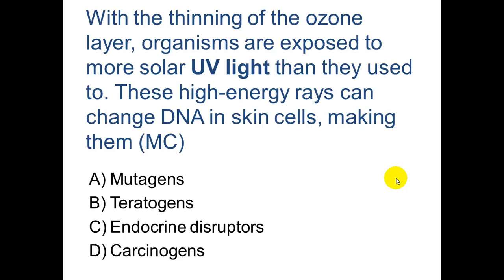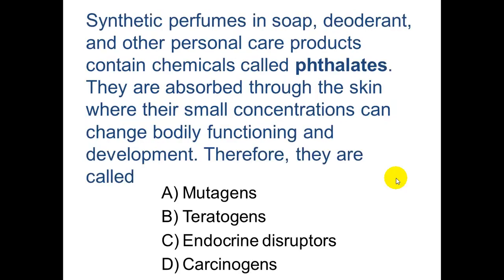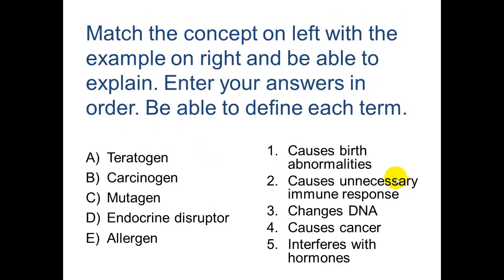With the thinning of the ozone layer, organisms are exposed to more solar UV light. These high-energy rays can change DNA in skin cells, making UV rays mutagens. Accutane is a drug given to reduce acne — I took it in high school — and it causes birth defects, requiring females to take a pregnancy test before using it; therefore it is a teratogen. Synthetic phthalates in perfumes, soaps, deodorants, and personal care products are absorbed through the skin and can change bodily functioning and development, making them endocrine disruptors.